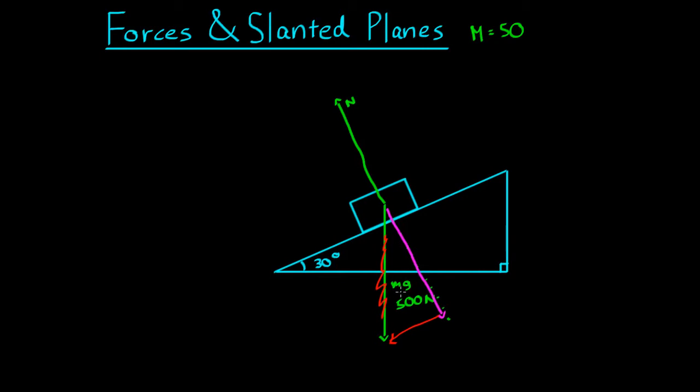So the first thing we need to recognize is that this, let's get rid of that red, this length here is 500, that's the original weight force, and this angle here is 30 degrees. So this purple component of the weight force is equal to cos, actually we'll say 500 times cos 30 degrees.